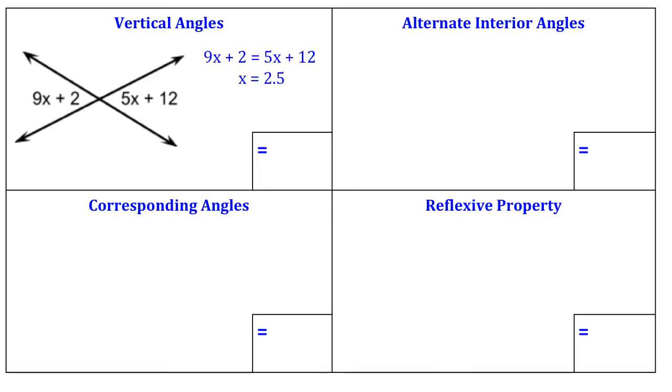Vertical angles look like this where they share a vertex in the middle. So when you have vertical angles, they're going to share this vertex in the middle here. Those vertical angles are going to be congruent to each other.